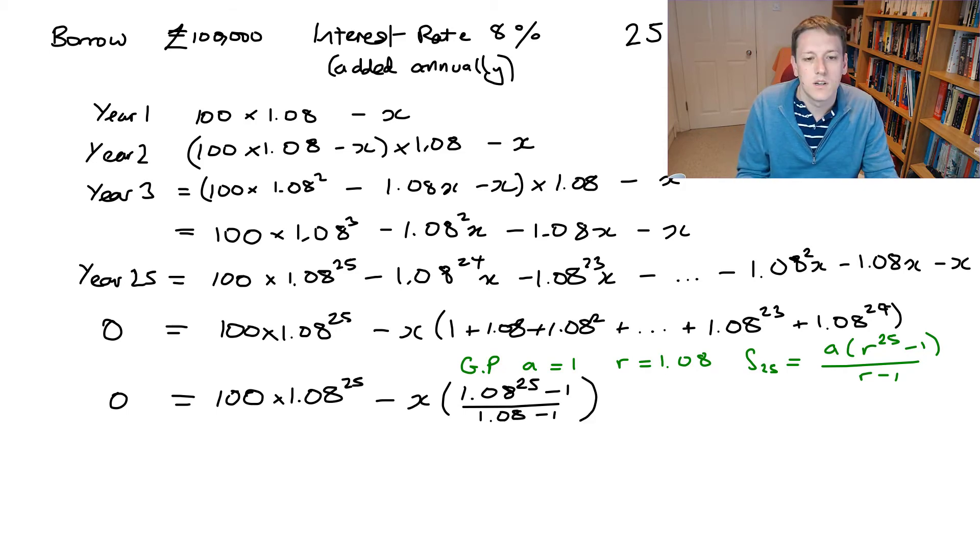And so now we see this is an easy equation to solve. We just have 0 equals c minus d times x where c and d are some of these constants. So x is just equal to c divided by d.